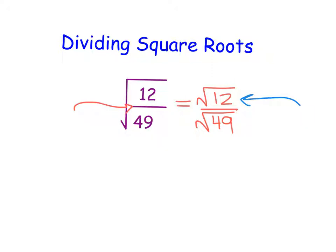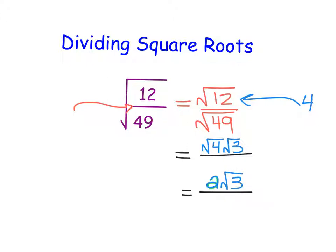I'm going to start by simplifying the square root of 12. I know that 12 is divisible by a perfect square of 4, so I can rewrite this as the square root of 4 times the square root of 3. The square root of 4 is 2, and then we have the square root of 3. So my numerator becomes 2 square root of 3. My denominator is the square root of 49, and 49 is a perfect square, so the square root of 49 is 7. My final answer, fully simplified, is 2 times the square root of 3 divided by 7.